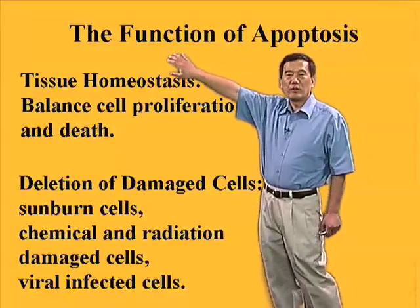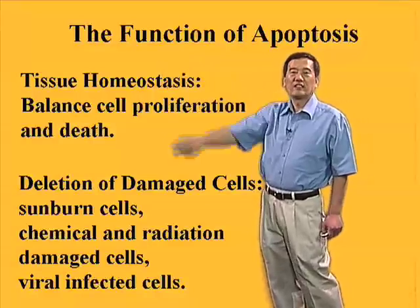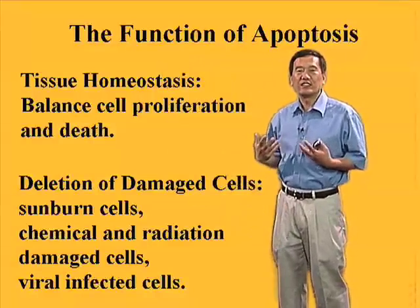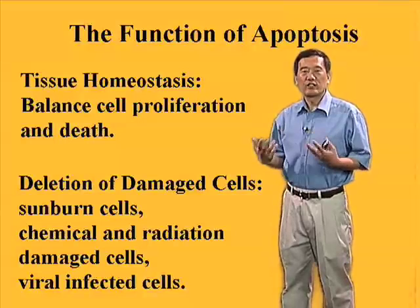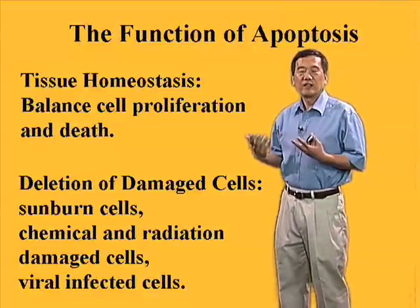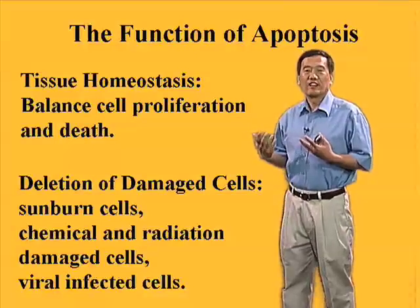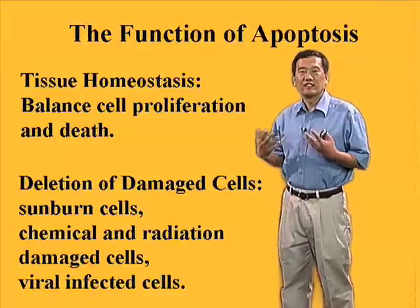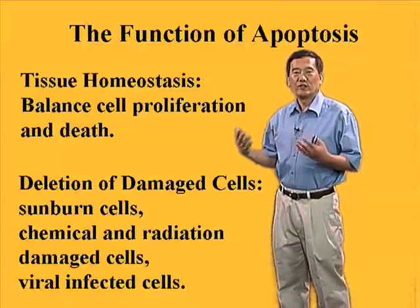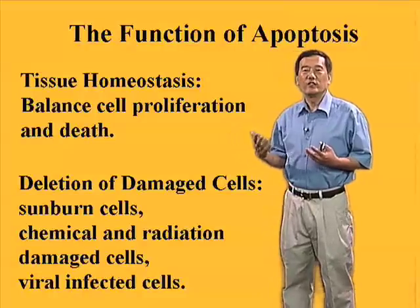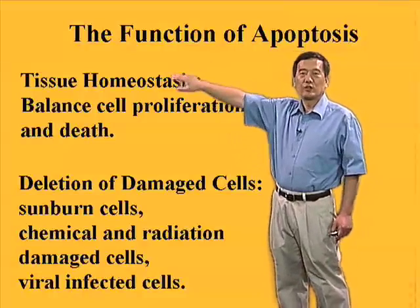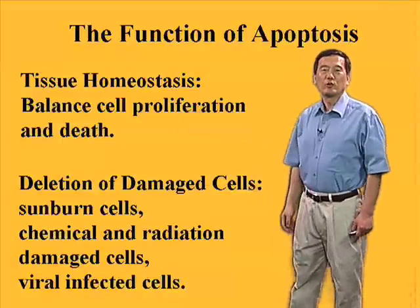Also, for tissue homeostasis: once we reach adult size, the size of our organs will stay the same. But in some organs, like skin and liver, the cells continue to divide, and these newly generated cells have to be balanced by the apoptosis of some of the old ones.